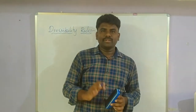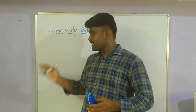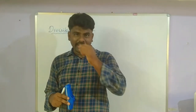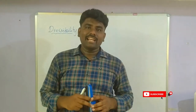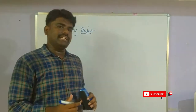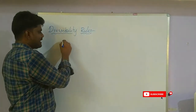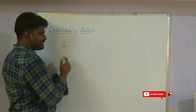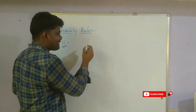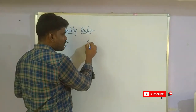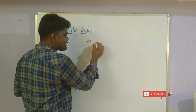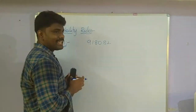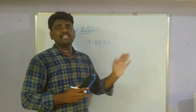Warm wishes to one and all. Today we are entering into the second session of divisibility rules. In this session we will discuss divisibility rules from 11 to 20. For the 11 divisibility rule, they are given the number 918082.